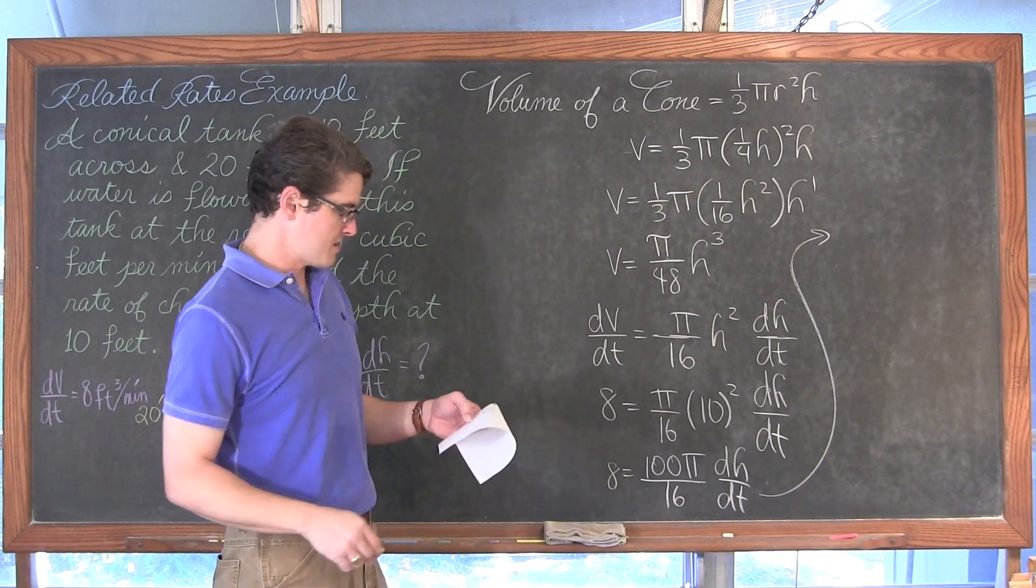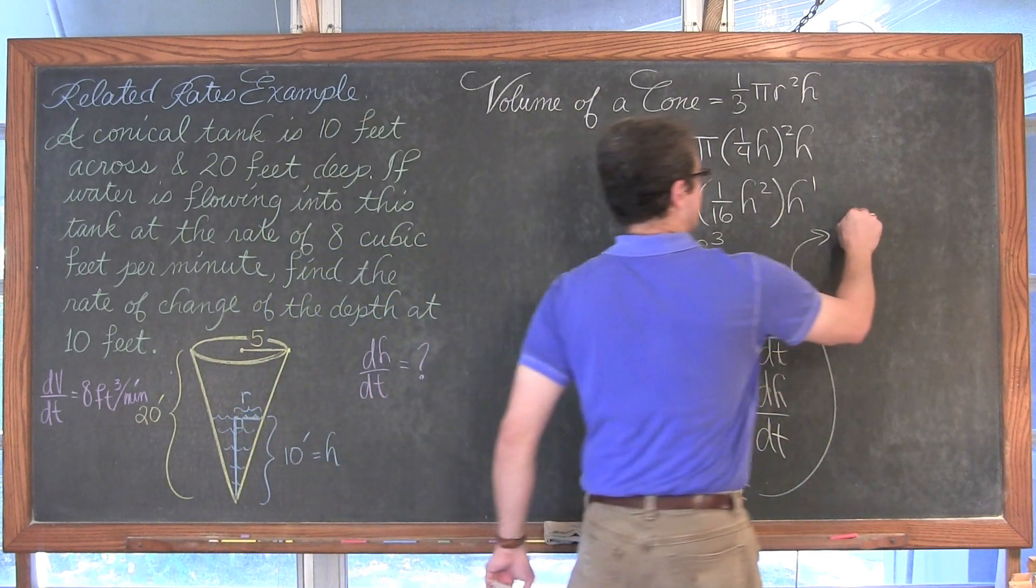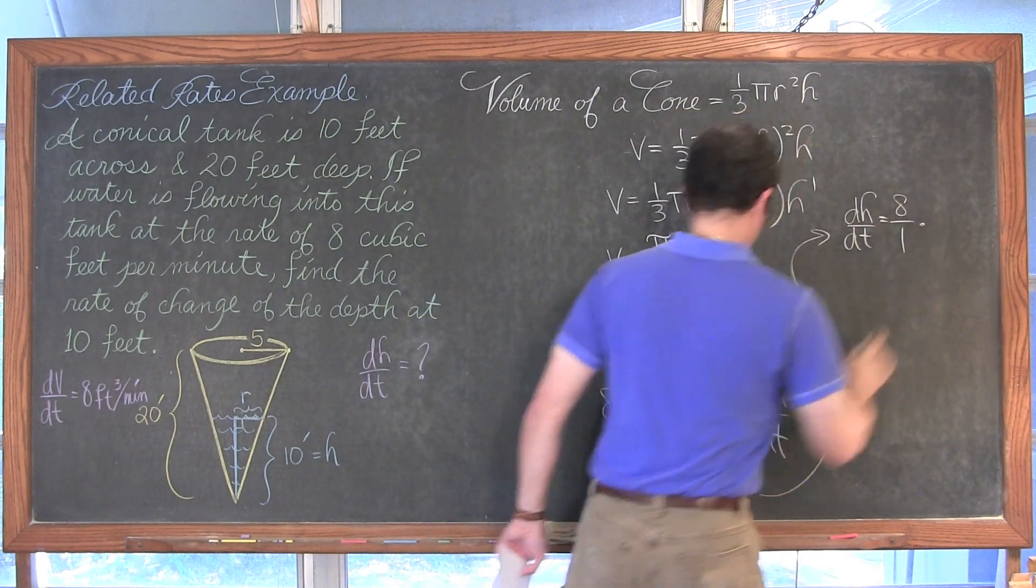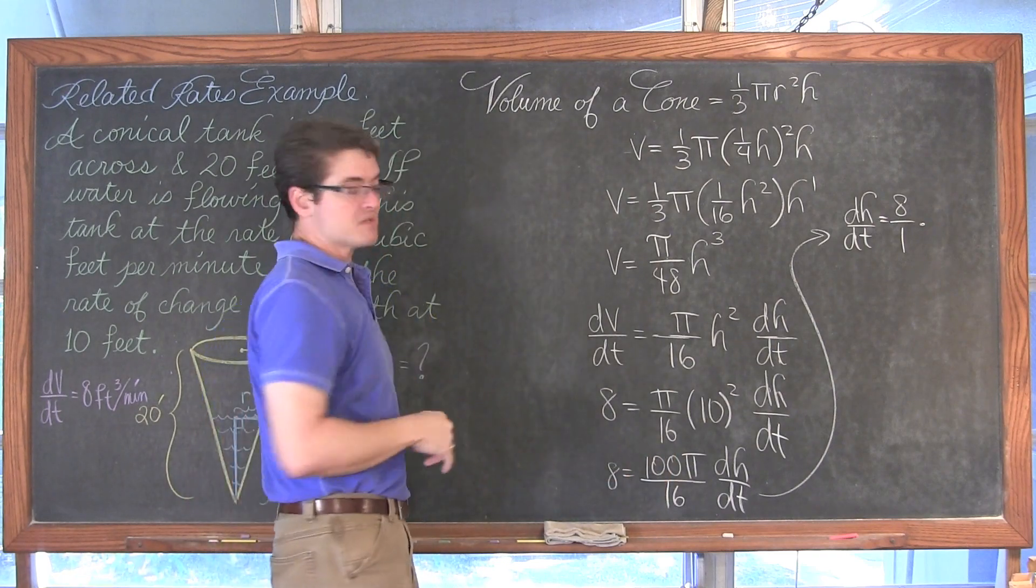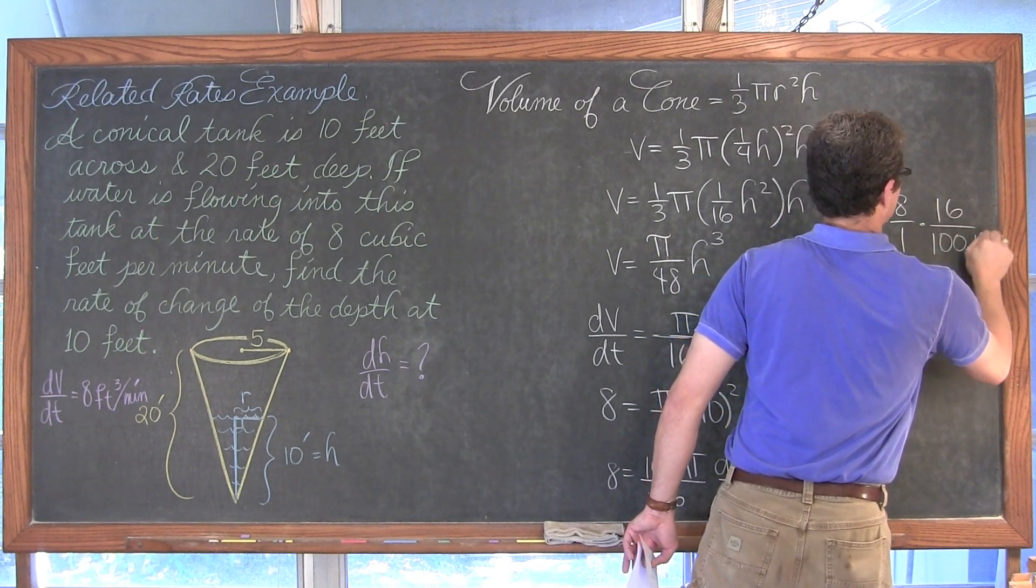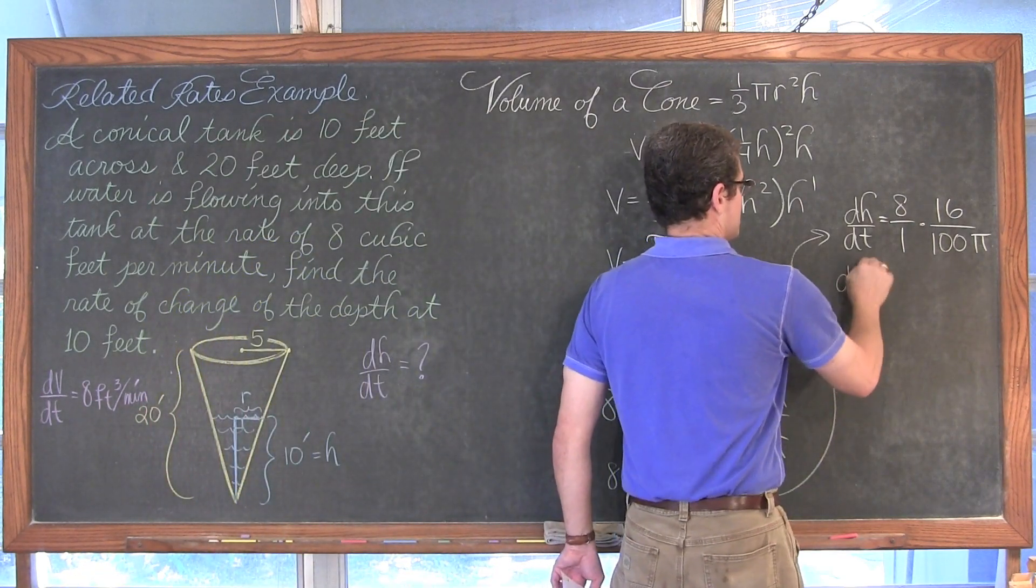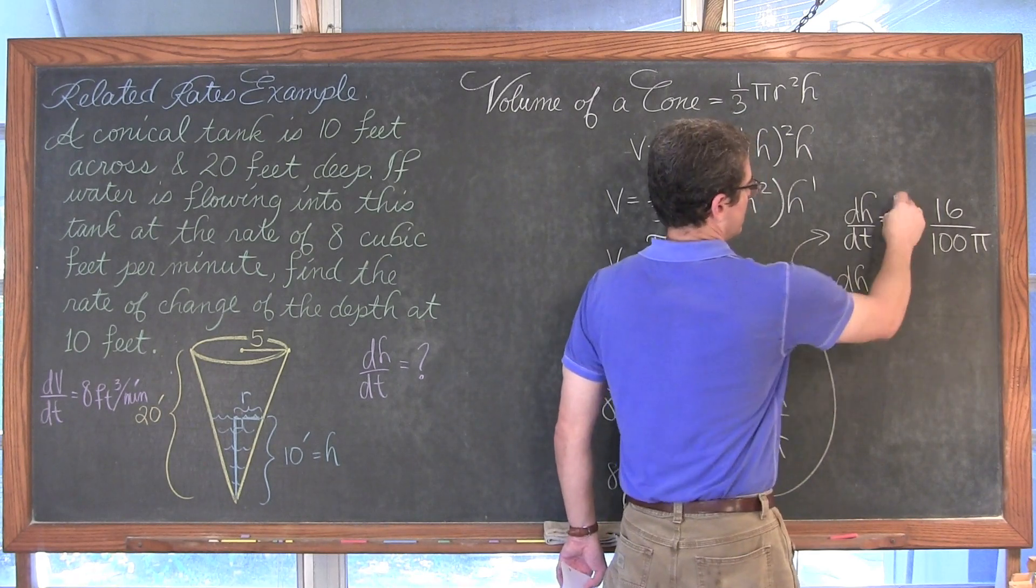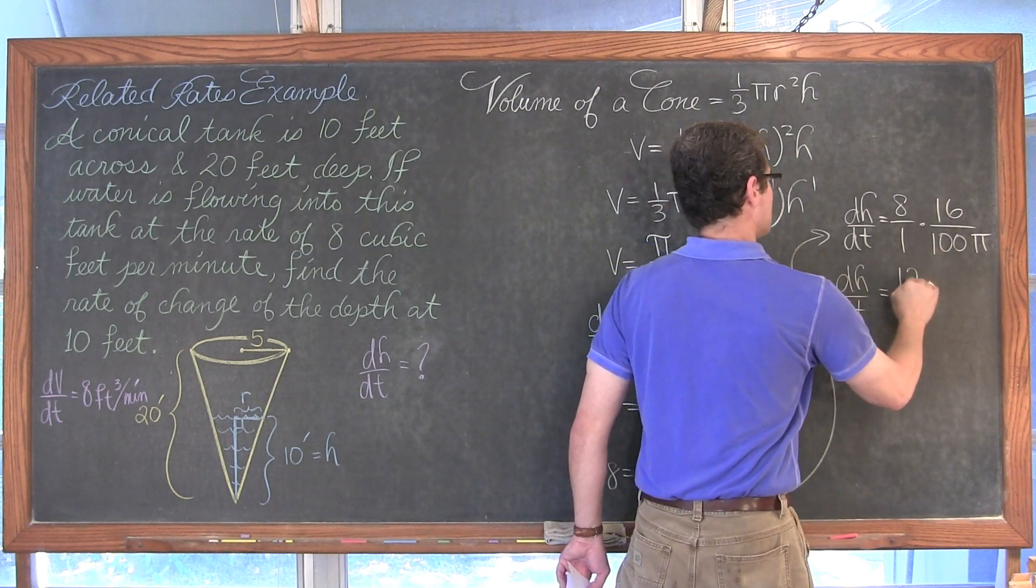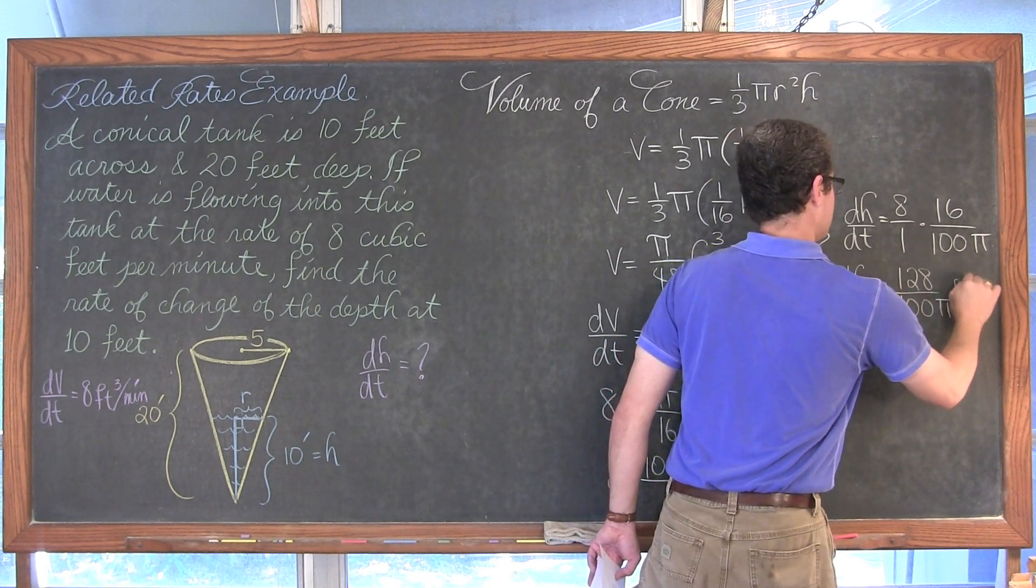So 8 is equal to 100 pi over 16 dh/dt. And if we wanted to make sure we kept this in exact format, multiply both sides by the reciprocal. So dh/dt is equal to 8 over 1 times 16 over 100 pi. And if you are looking for an answer in exact format, this is going to be dh/dt equals 128 over 100 pi feet per minute.